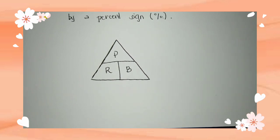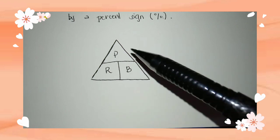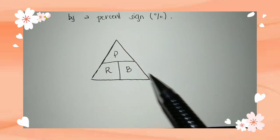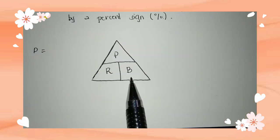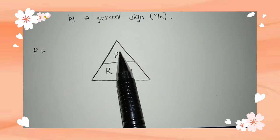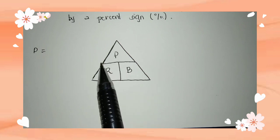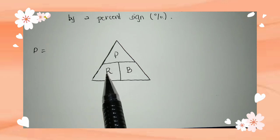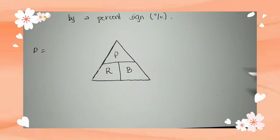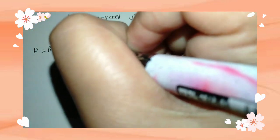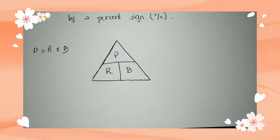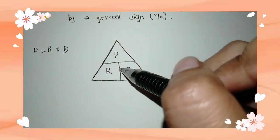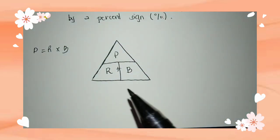We can more easily remember the formulas for percentage, base, and rate using this triangle. How do we derive those formulas using this triangle? For example, if we're going to find the percentage — percentage is at the top. Since R and B are side by side at the bottom, we are going to multiply R by base. So the formula for percentage is R times B.